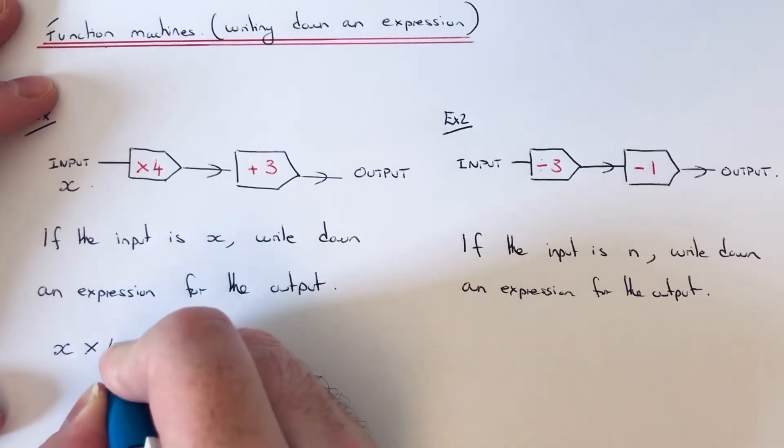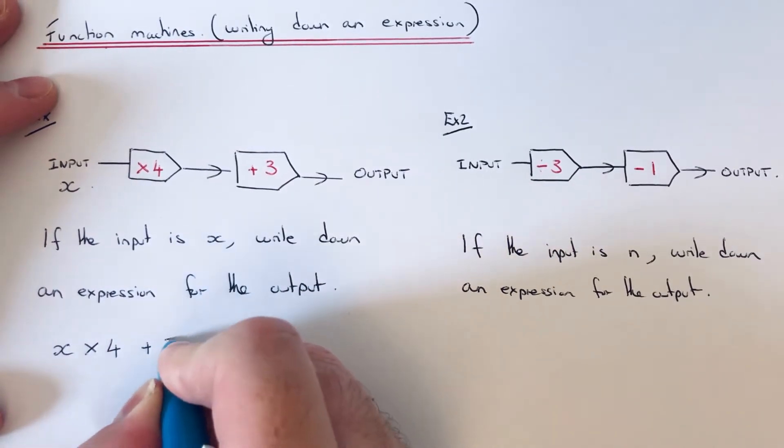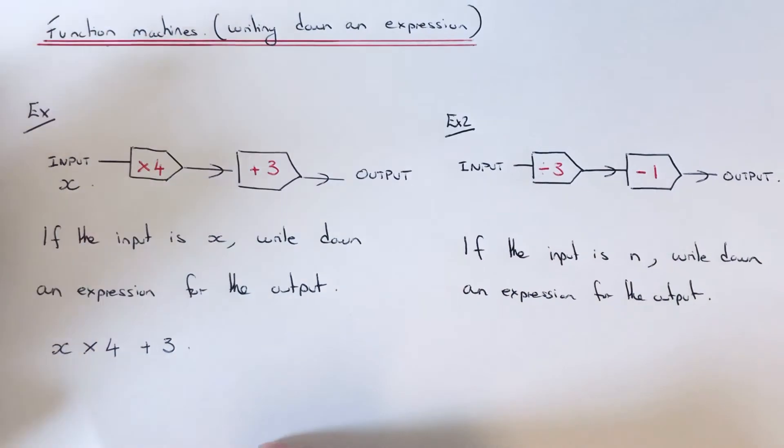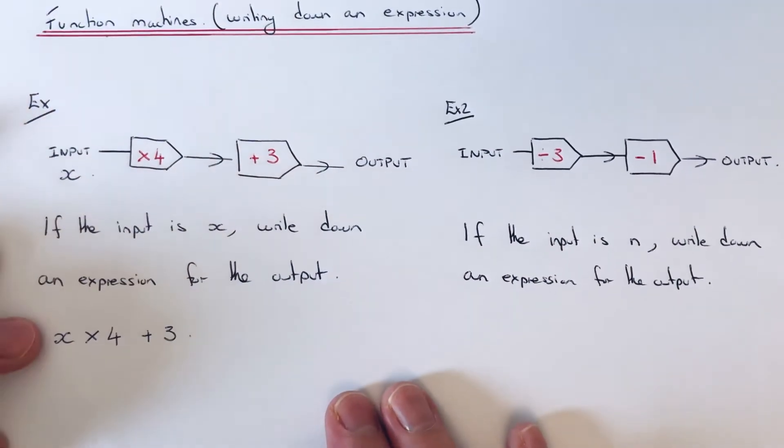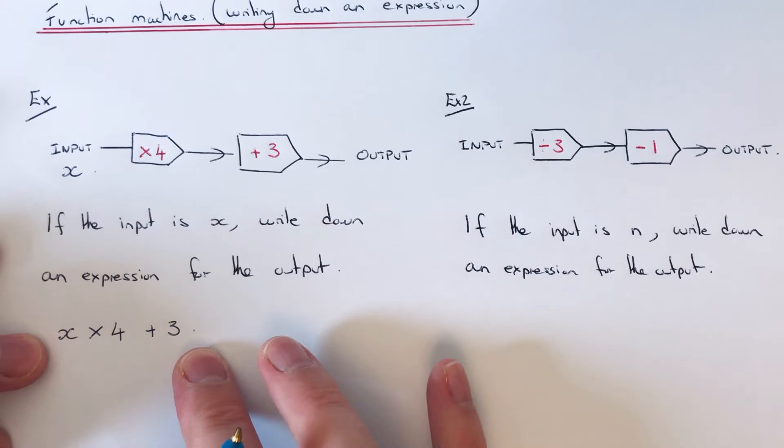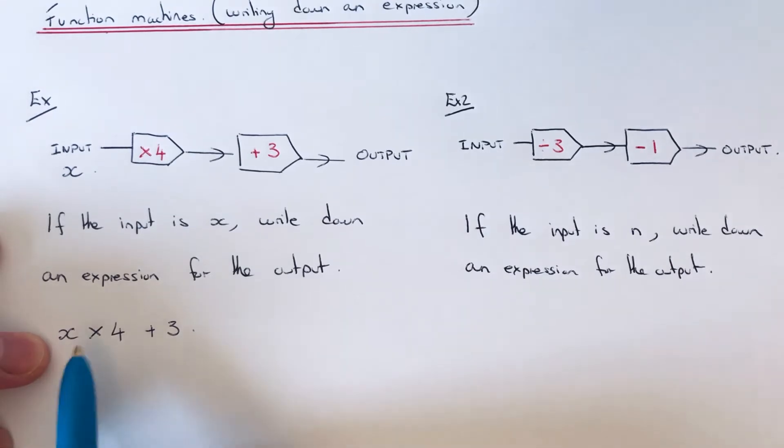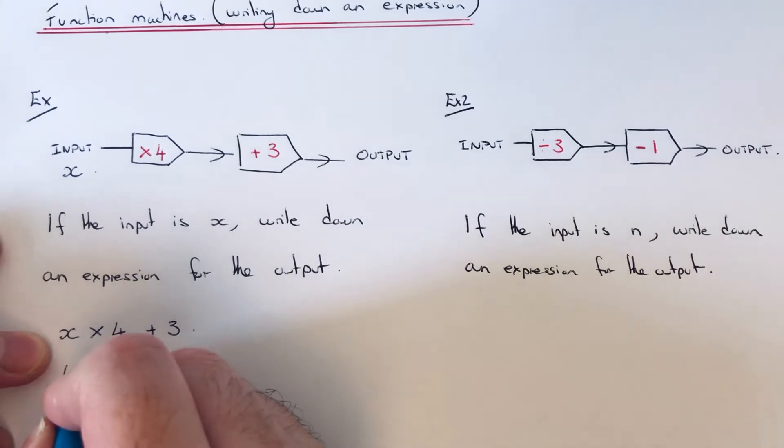So we just need to now simplify this expression. X times 4, you can write that in algebra as 4x. So you put the number first, followed by the letter.